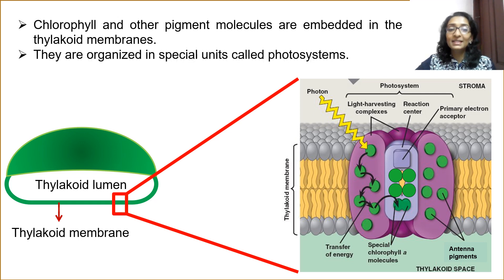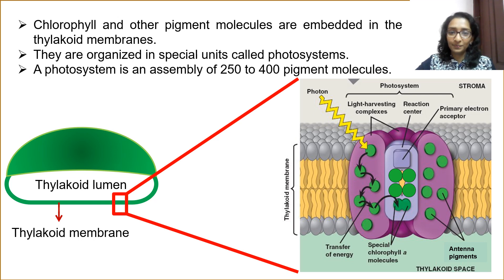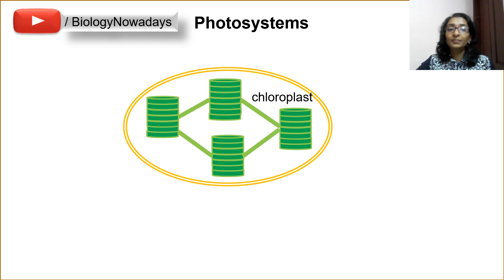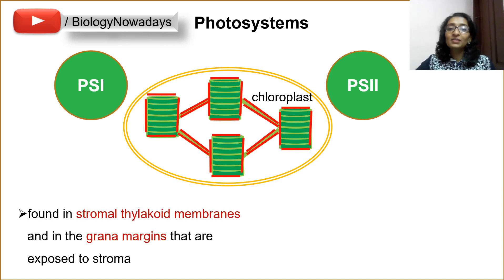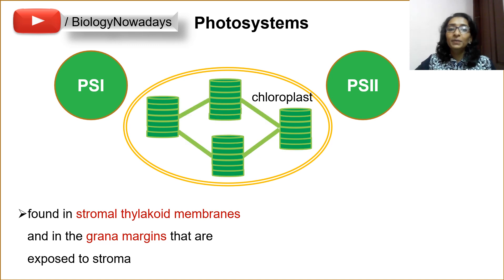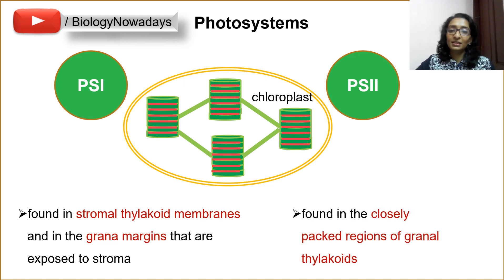A photosystem is an assembly of 250 to 400 pigment molecules. There are two different types of photosystems: Photosystem I or PS1 and Photosystem II or PS2. PS1 is found in the stromal thylakoid membranes and in the grana margins that are exposed to the stroma. On the other hand, PS2 is mainly localized in the closely packed regions of granal thylakoids.